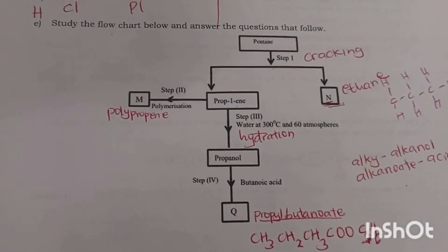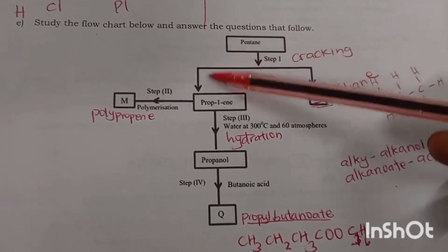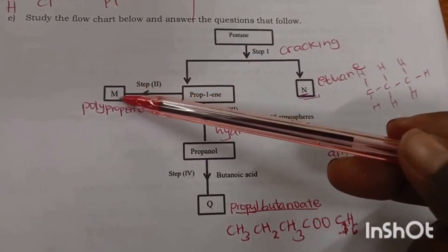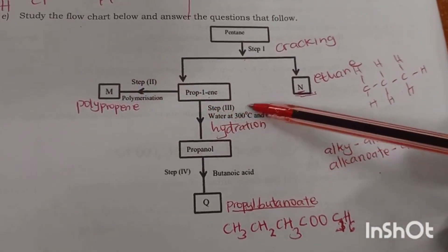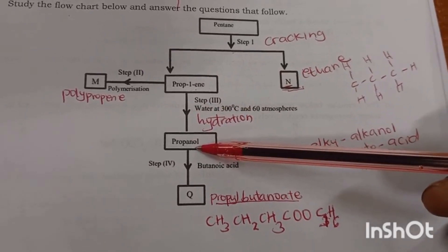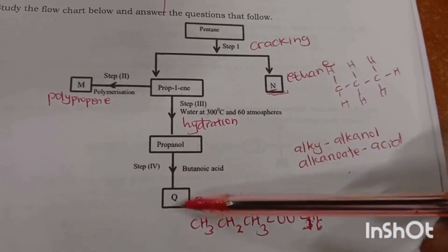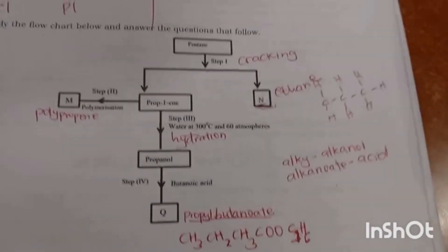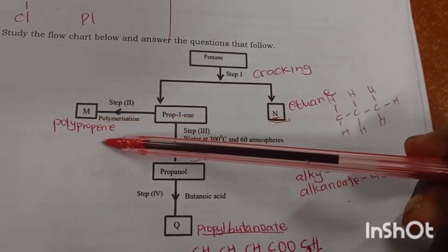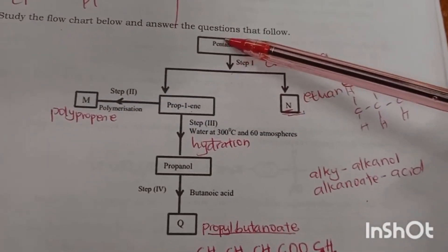You are supposed to study that flowchart and answer the questions that follow. You have pentane, then it goes to propene, then another step gives M and N, then propanol, and passing through butanoic acid you get the ester substance.